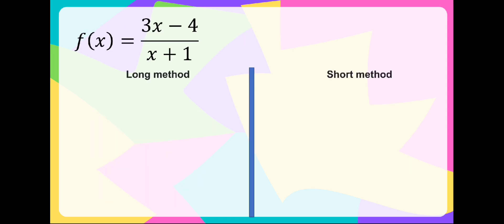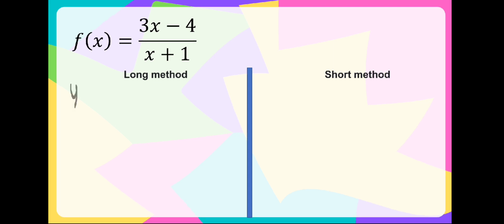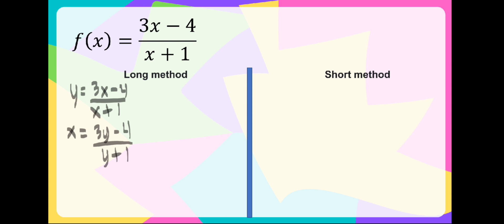Now we have a rational function. Let us get its inverse. For the long method, we have y is equal to 3x minus 4, all over x plus 1. Interchanging, we have x is equal to 3y minus 4, all over y plus 1. Then we use cross multiplication: x times the quantity y plus 1 is equal to 3y minus 4.